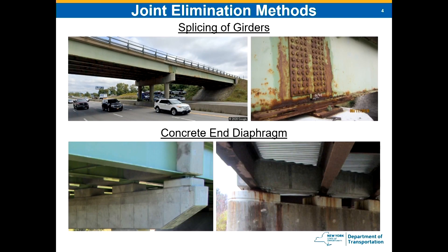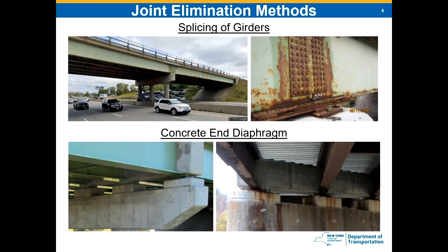Some joint elimination methods we use: the first is splicing the girders to eliminate the joint at a pier. This method has been around for a while. It does require some design — you're adding continuity, so you may have to do some top flange strengthening for tension the girder wasn't originally designed for, and you may have to add some diaphragms for the bottom flange to address compression and any buckling. One issue is these bridges aren't fabricated to be spliced; things don't perfectly line up and shift over time, which can be a major problem.